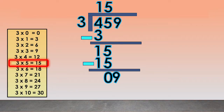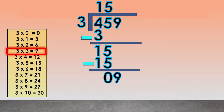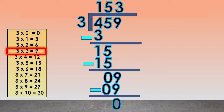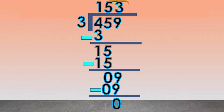Now find how many times 3 goes into 9. We will use again the multiplication table of 3 and find the product equal to or nearest to 9. We will use 3 times 3 equals 9. We write the 3 above the 9. Then multiply 3 times 3 equals 9 and write 9 below the 9. Subtract 9 minus 9 equals 0. Since we are not left with any digits of the dividend to bring down, we are finished. The quotient is 153.